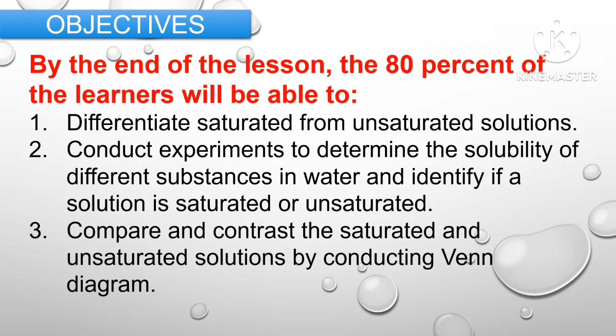The objectives: by the end of the lesson, 80% of the learners will be able to: first, differentiate saturated from unsaturated solutions; second, conduct experiments to determine the solubility of different substances in water and identify if a solution is saturated and unsaturated; and third, compare and contrast the saturated and unsaturated solution by conducting a Venn diagram.